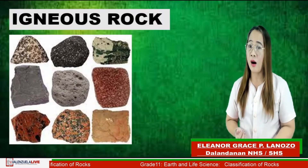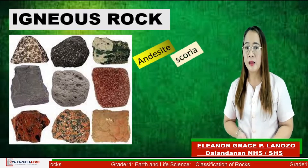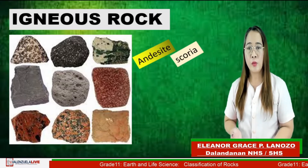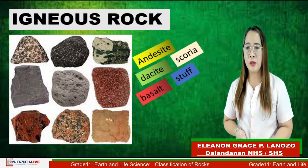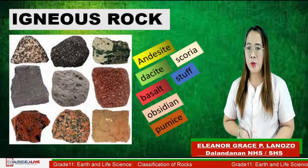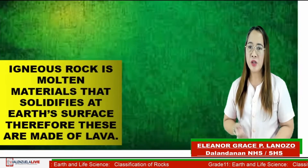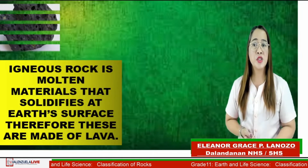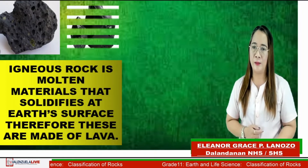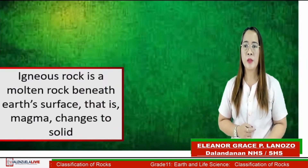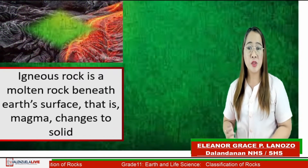Examples of igneous rocks include andesite, scoria, dacite, basalt, and others. Igneous rock is also a molten material that solidifies at the Earth's surface — therefore these are made of lava. Igneous rock can also be molten rock beneath the Earth's surface, where magma changes to solid.